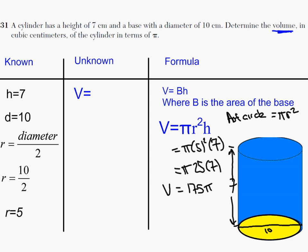So the volume is equal to 175 pi. I'm not going to multiply by pi. I'm going to leave it like this because it says to leave the volume of the cylinder in terms of pi. So my answer is 175 pi.